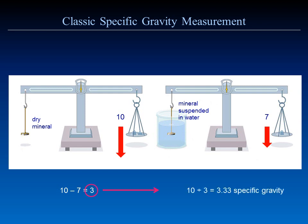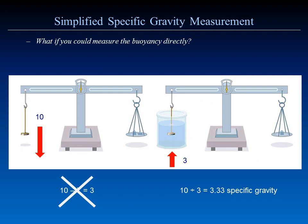You then divide the dry weight by the weight of the displaced water, and you get a value of 3.33, which equals the specific gravity. We had a measurement of 10 dry and 7 wet — where did the 3 go? The 3 is found in the increased weight of the beaker of water. What if we could measure that 3 directly? We measure the mineral dry, get a value of 10, measure the increased weight of the beaker once the mineral is suspended in it, divide 10 by 3, and we get 3.33 — the specific gravity. That is the new methodology being proposed here.